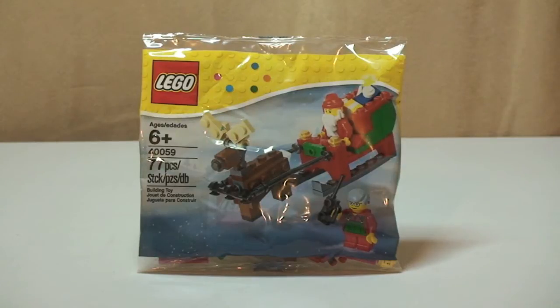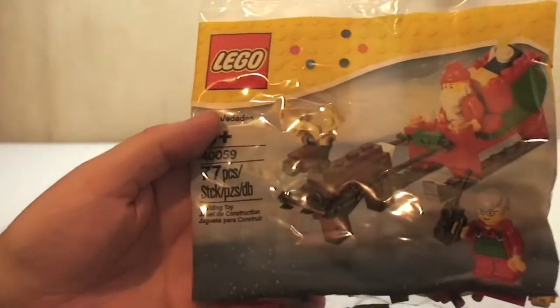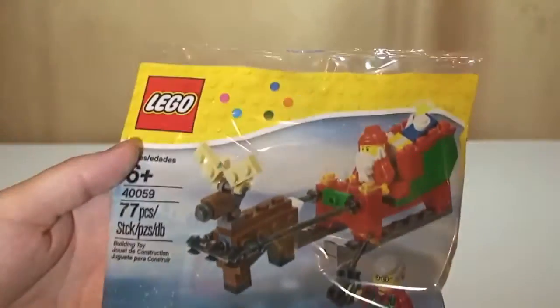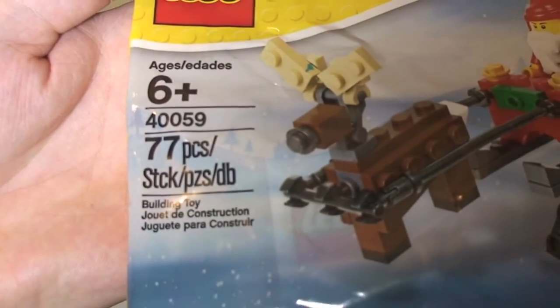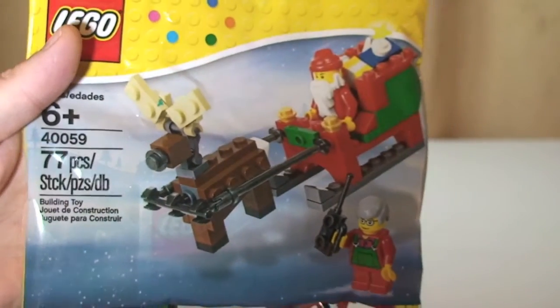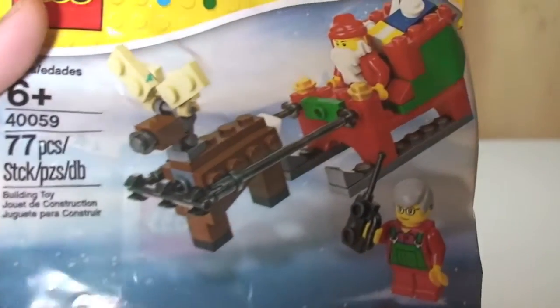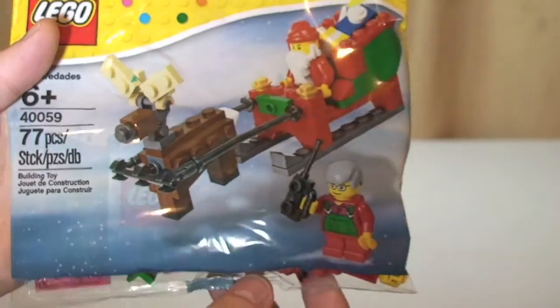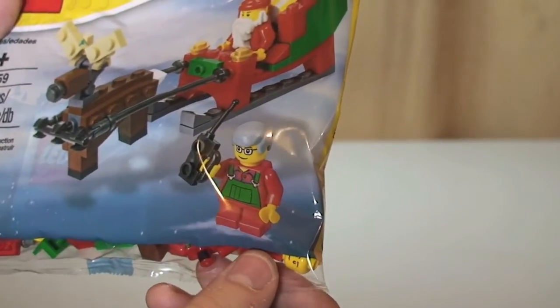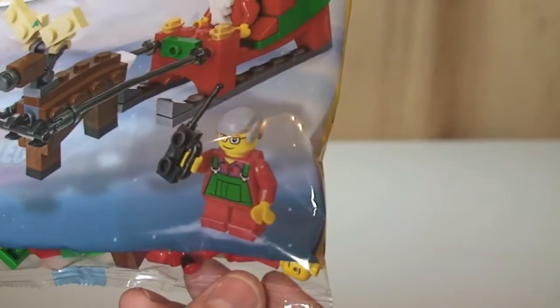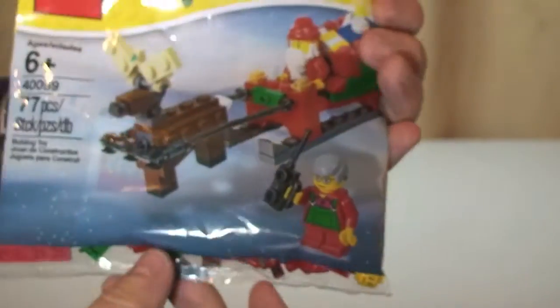So let's have a quick look at the bag itself. As we can see, here are the details: 40059, 77 pieces. You can see a picture of Santa and his sleigh. You can assume that's Rudolph pulling the sleigh along, and we have, assuming that's going to be a little helper down there with his radio. So there we go.